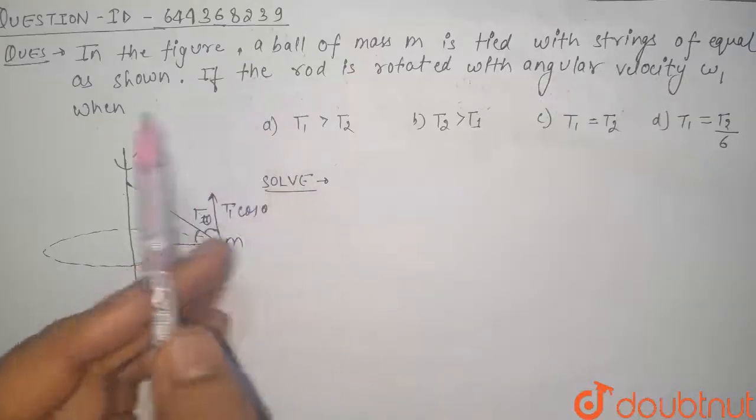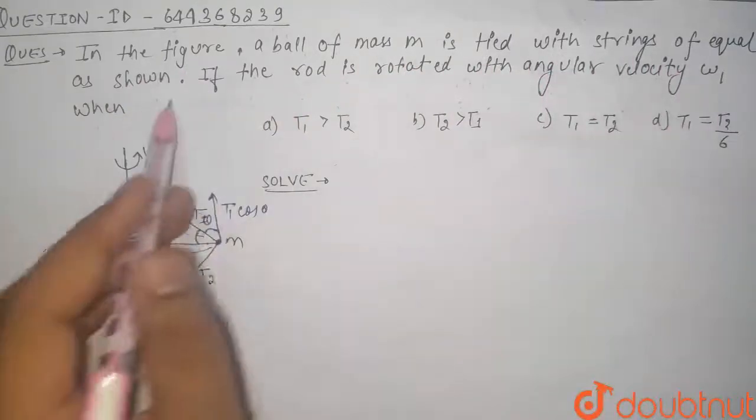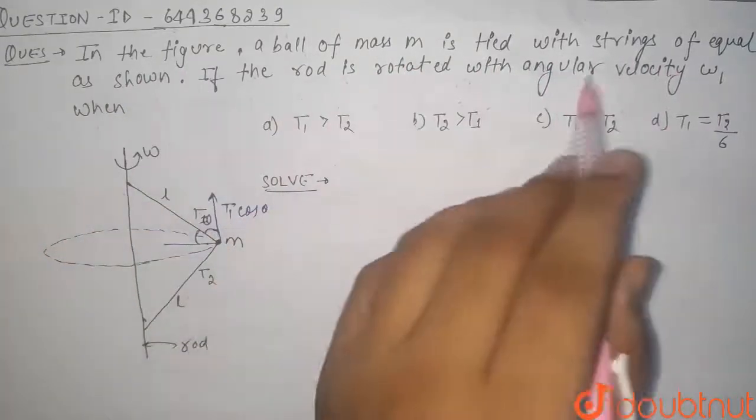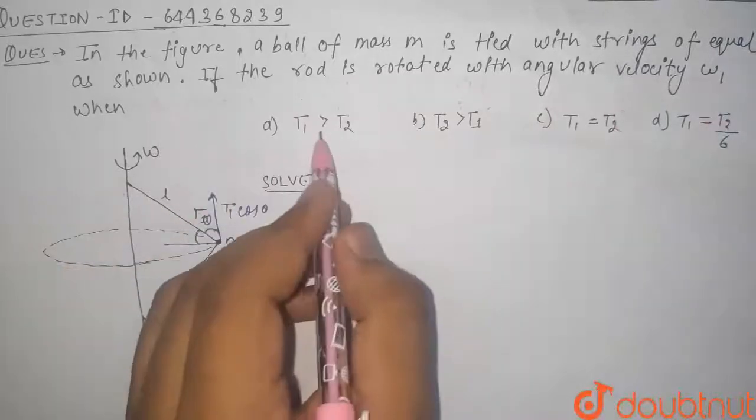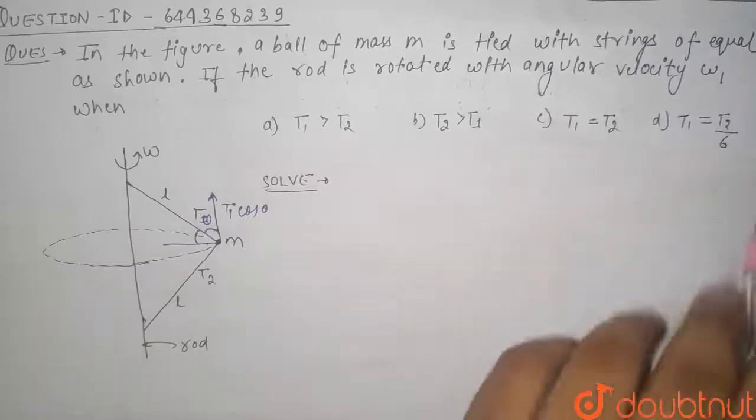Hello guys, so today's question is: In the figure, a ball of mass m is tied with a string of equal length as shown. If the rod is rotated with angular velocity omega, then: a) T1 is greater than T2, b) T2 is greater than T1, c) T1 equals T2, d) T1 equals T2 divided by 6.